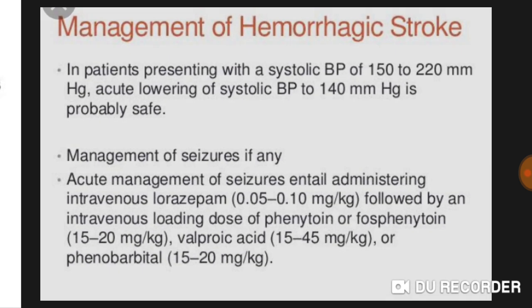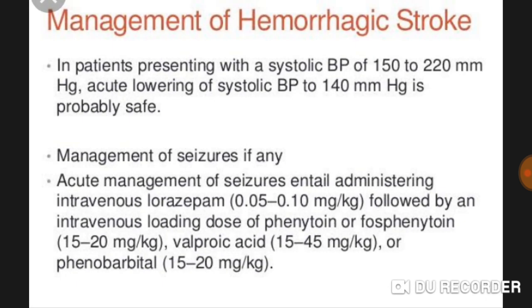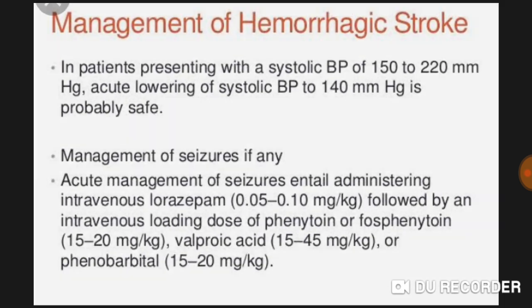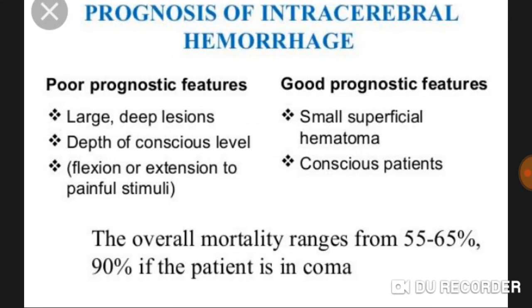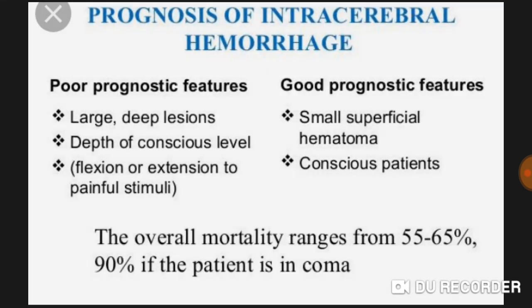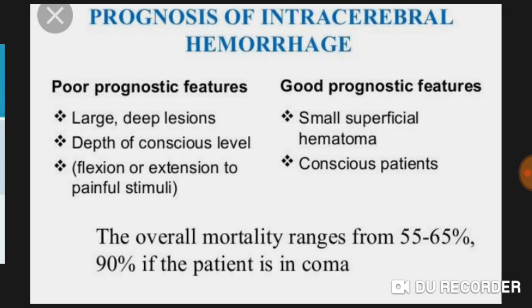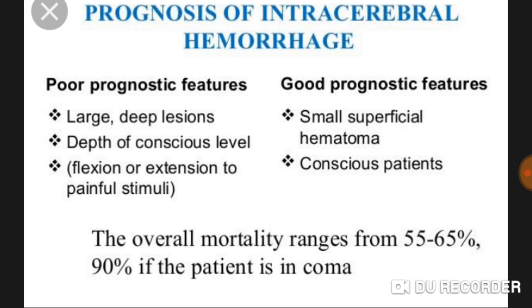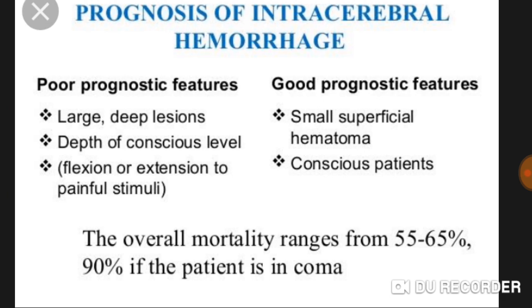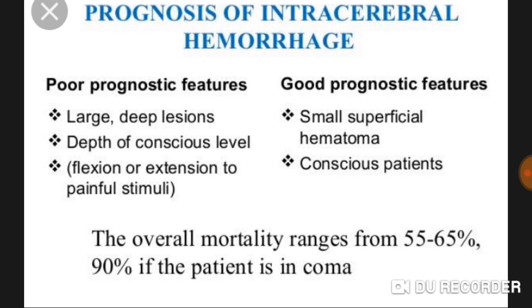Additional treatment includes vitamins and physiotherapy for healing and recovery. Regarding prognosis of intracerebral hemorrhage: poor prognostic factors include large and deep lesions, depressed level of consciousness, and flexion or extension to painful stimuli. Good prognostic features include small superficial hematoma and a conscious patient. My patient has good prognostic factors — the lesion is small and superficial, and she is conscious.